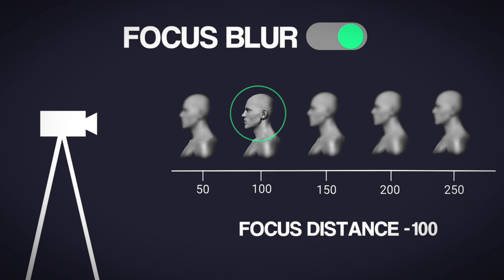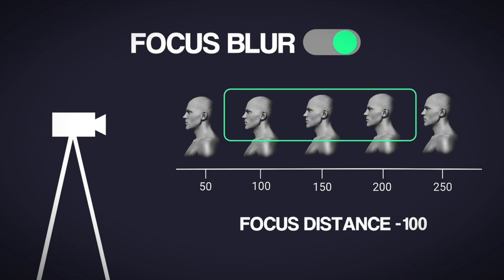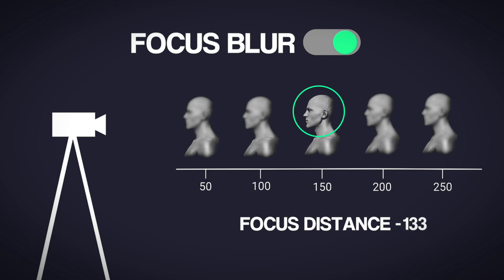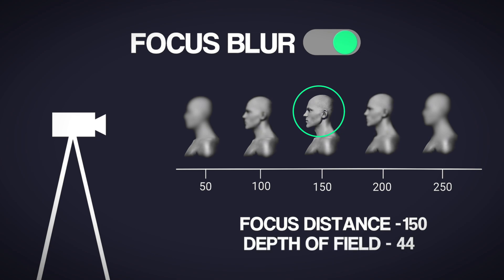Now let's say we want to focus on the three people in the middle. We can increase the focus distance to 150 — at this point everyone will be blurred. That's where the depth of field feature comes in. If I set the depth of field value to 50, the two people standing next to our main subject will also come into slight focus.